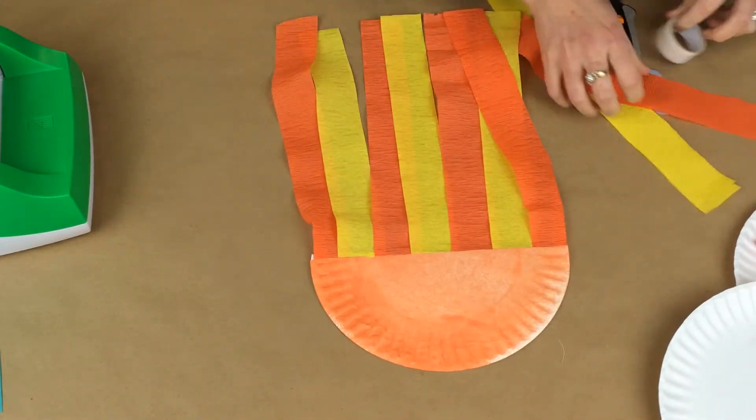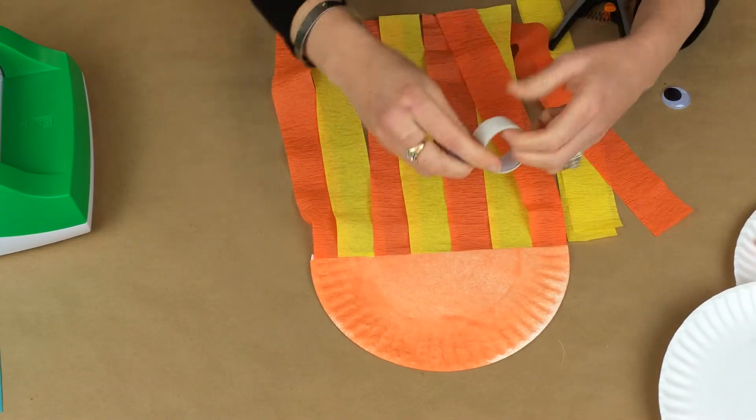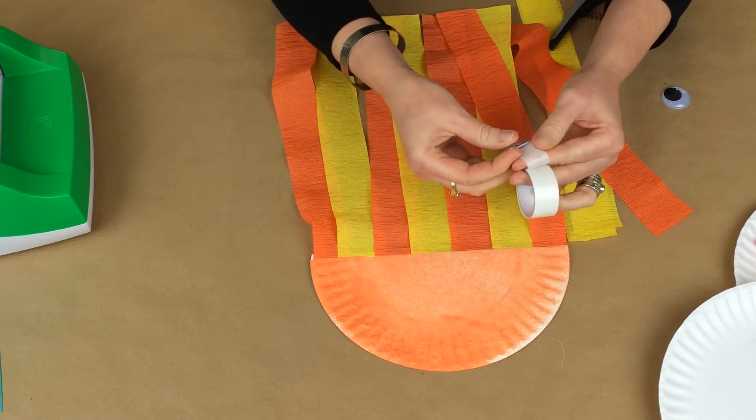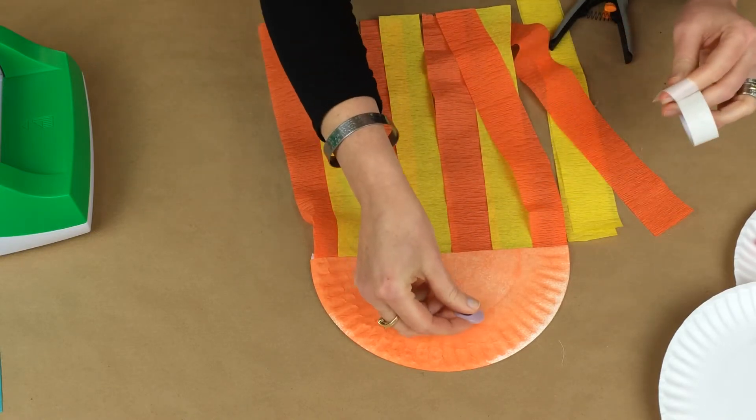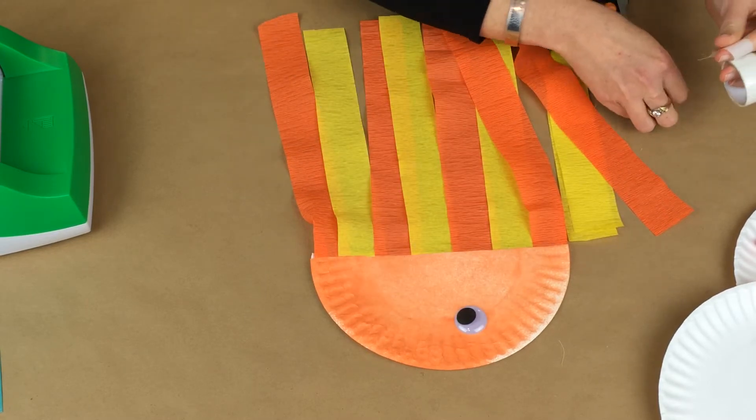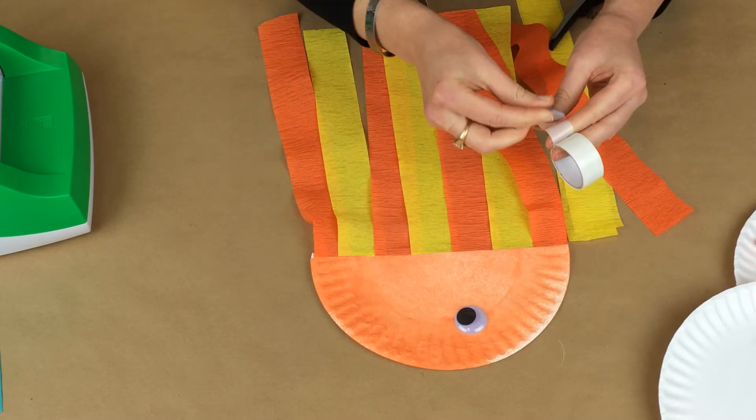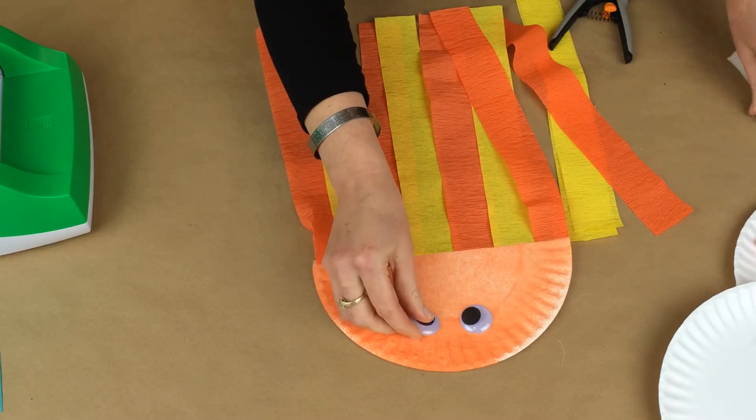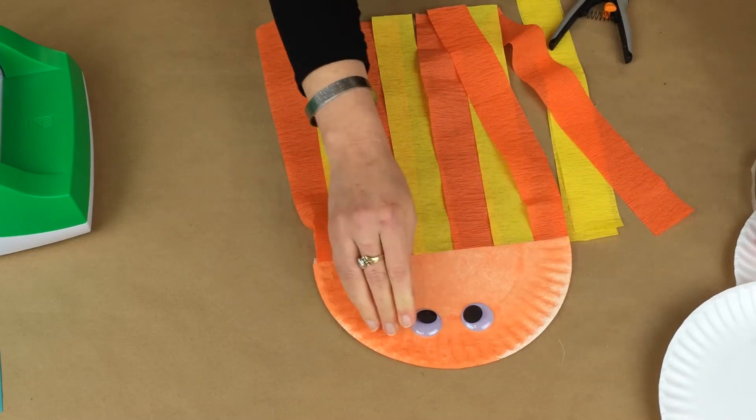Flip it over. Use my, in this case, Xyron adhesive dots to adhere my googly eyes. And then I'm going to take my red crayon and draw a mouth.